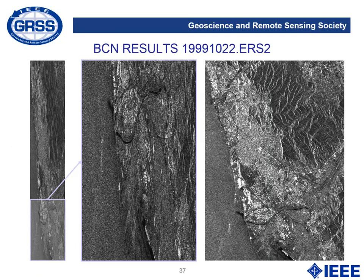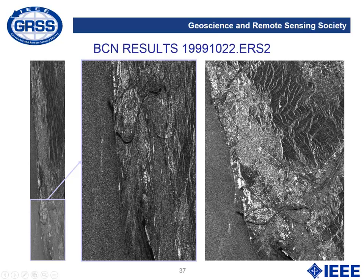Starting from the raw data, we can obtain the single-look complex image. This is an image of the city of Barcelona using ERS data. For ERS data, the resolution was very different in range and azimuth — a ground resolution of around 20 meters in range and 4 meters in azimuth. After some multi-looking to accommodate proper aspect ratio and reduce speckle, we can see the final image with the city of Barcelona, the airport, the mountains and other features. In that image, we can see the distortions as the different slopes of the mountains appear compressed towards the radar.